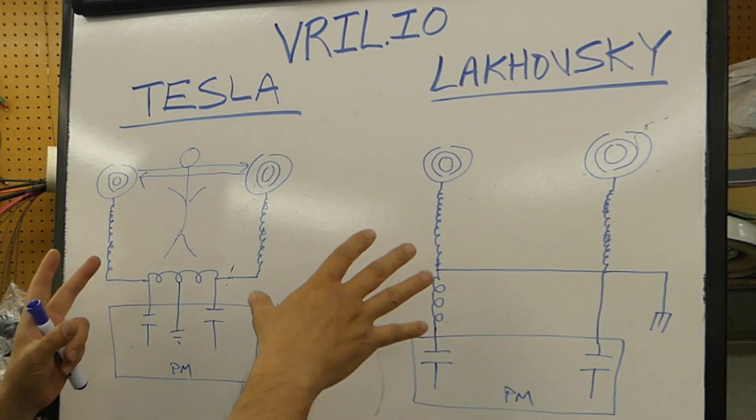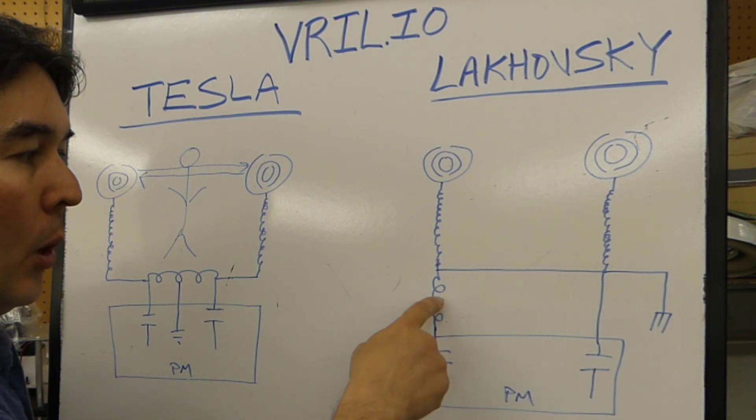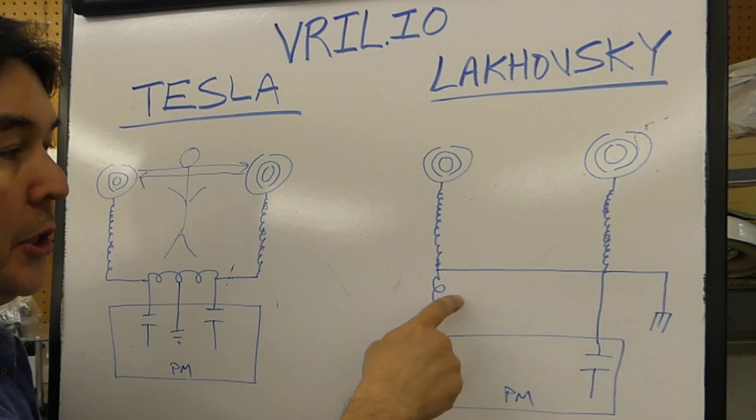If we look at the Lakhovsky circuit here, it's similar, but there's a very distinct difference. Each time the coils fire here from the capacitors, can be the identical pulse modulator. What happens is, for one,